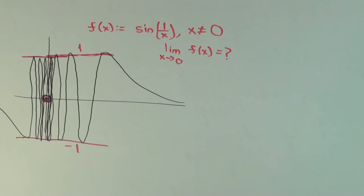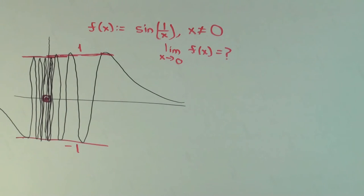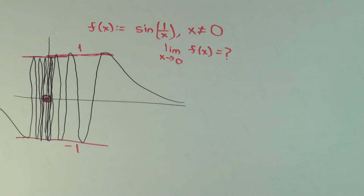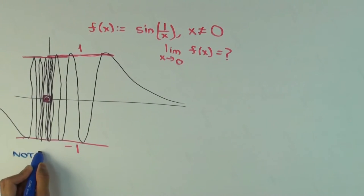No. Why not? Isn't it coming really close to 0? Sometimes. It means sometimes it's really close to 0, and then it flies away. So what's your objection — what is not happening? We cannot trap it in a neighborhood of 0.